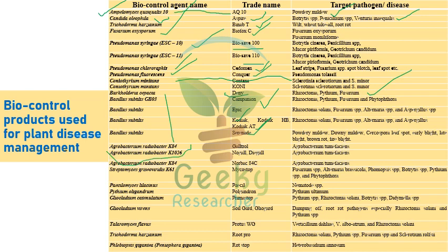The most important ones are Agrobacterium radiobacter K84 and K1026. Agrobacterium radiobacter K84 has the trade name Galltrol and is recommended against Agrobacterium tumefaciens. Agrobacterium radiobacter K1026 has the trade name Nogall or Digall, and is also exploited against Agrobacterium tumefaciens, which causes crown galls in stone fruits.